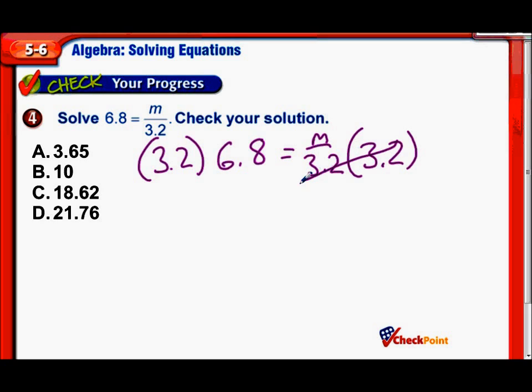Now I have to figure this out. So 3.2 times 6.8. Let me set that up here. 3.2, 6.8. I'm going to multiply those. 8 times 2 is 16. 8 times 3 is 24 plus 1 is 25. Now I have 6 times 2 is 12, and 6 times 3 is 18 plus 1 is 19.